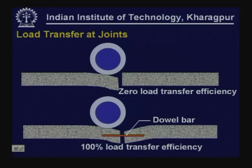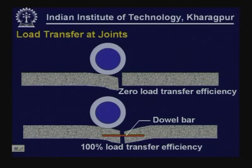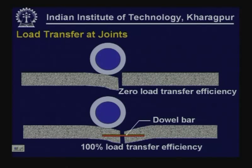For the same situation, assume we have connected the two slabs by a system of dowel bars placed at specified spacing. What is depicted here is that the deflection on the left-hand side is almost equal to the deflection on the right-hand side. This means there is almost 100% load transfer efficiency — both slabs are sharing the load in equal amount. The joint is able to transfer load — it is almost like a monolithic construction, as if the slab was just extending at that joint.